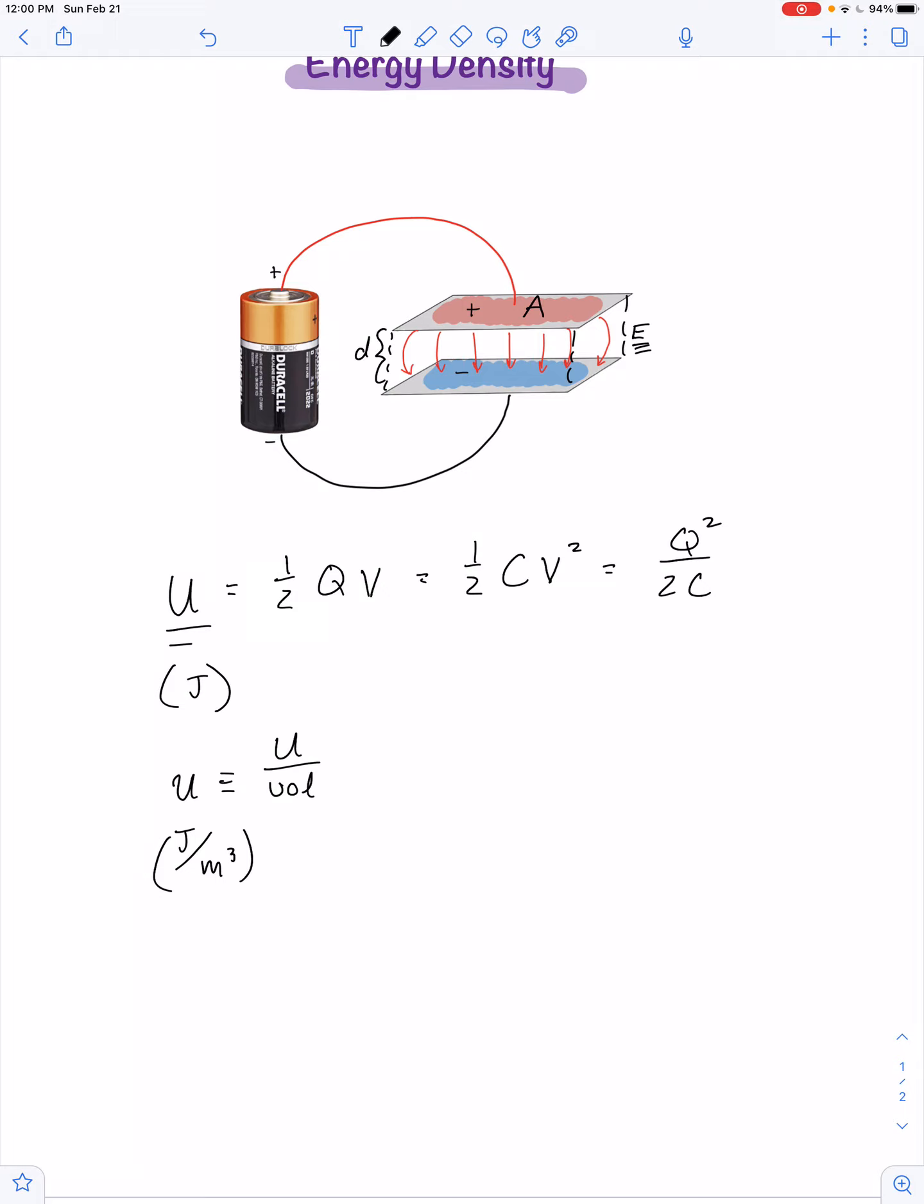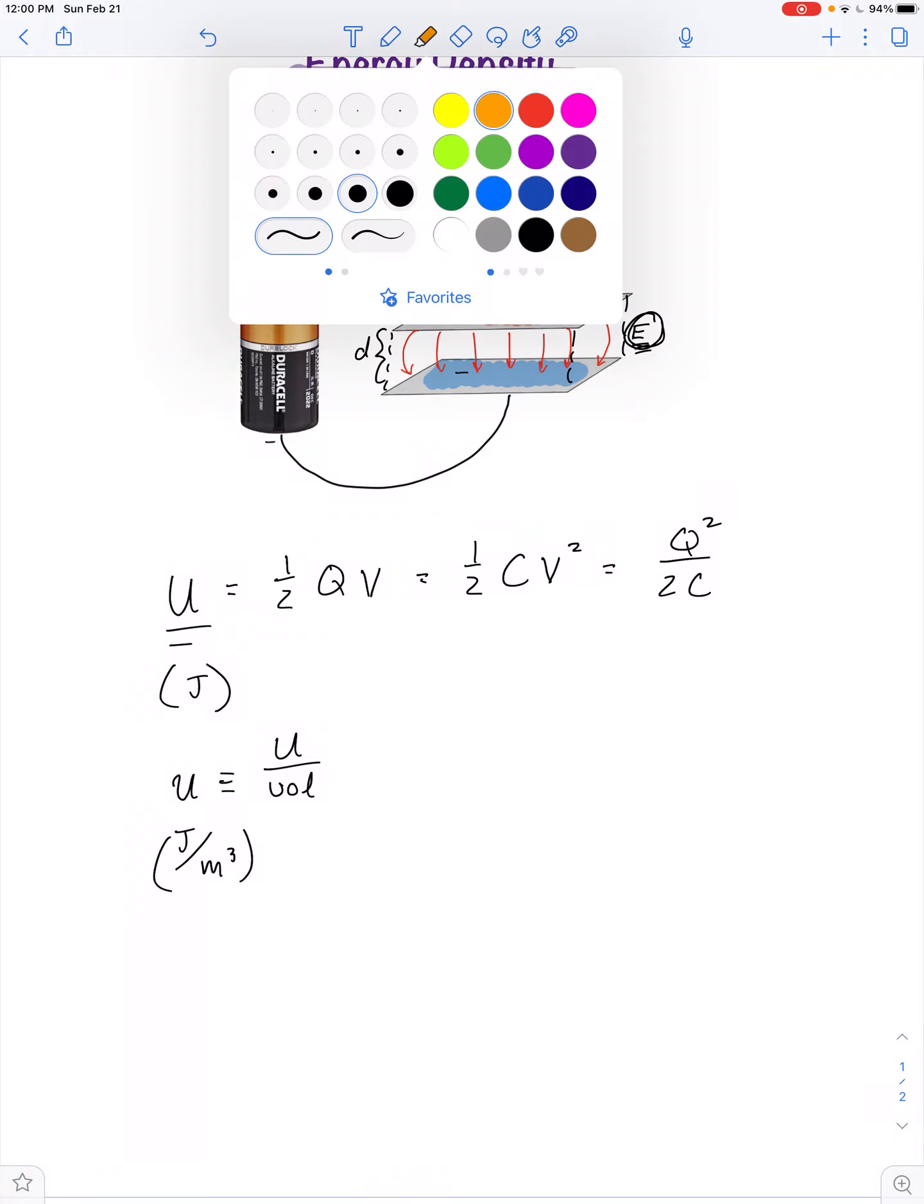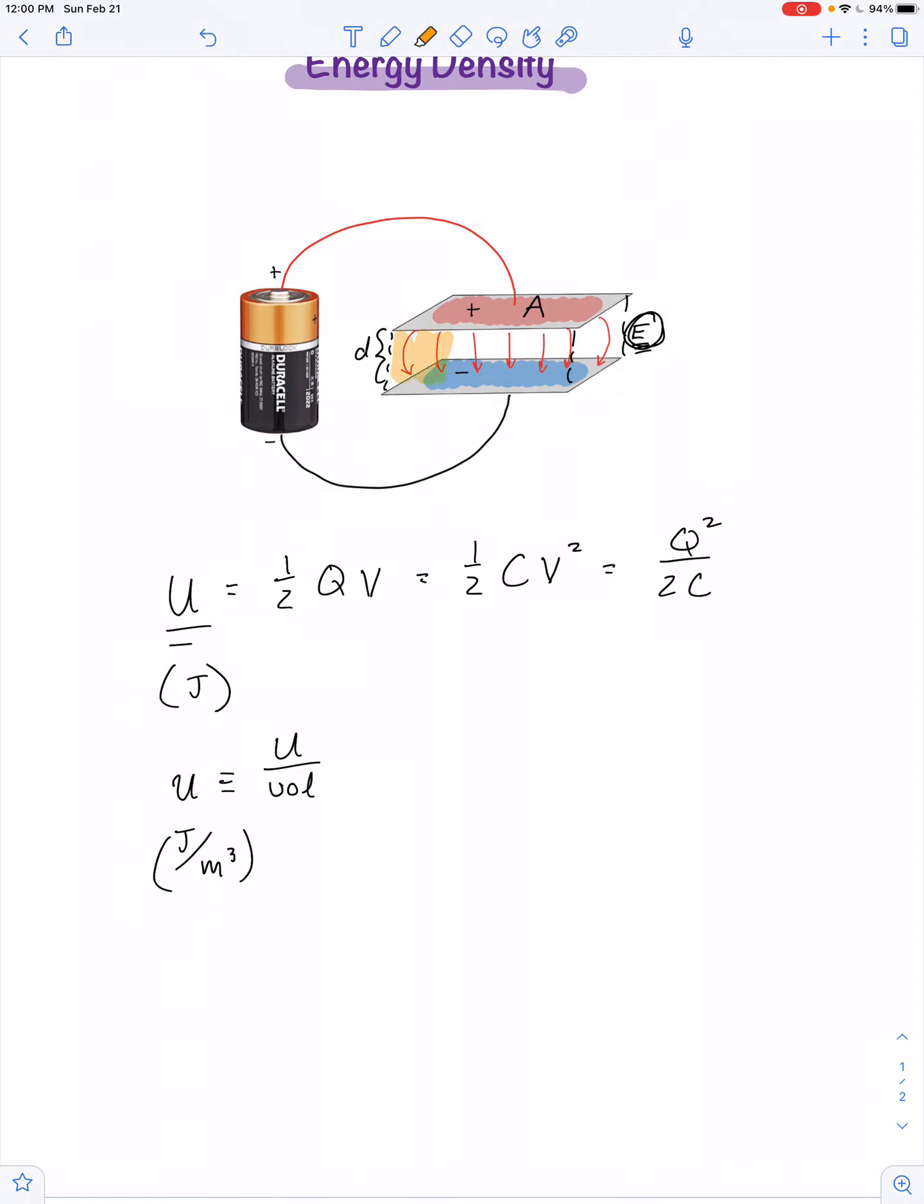So the volume in which this uniform electric field is contained can be represented by this shaded area, shaded in orange, and that shaded area has a volume just equal to the area of the plates multiplied by the spacing.